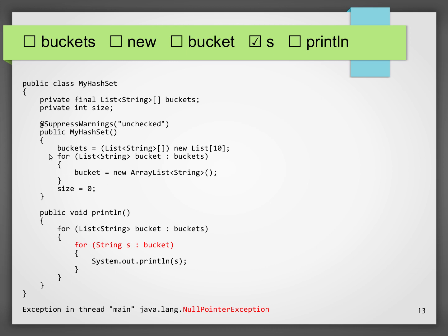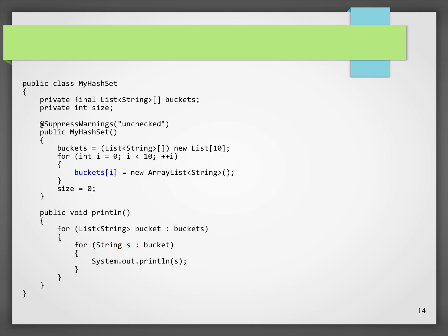So how do we mutate the original cells inside the array? If we can't do it with a for-each loop, we use a traditional for loop: starting at 0, all indices smaller than 10, increment by 1. Then buckets at index i is the original array cell — it's not a copy — so this assignment will have an effect. There's no task here; this is just to explain how you would do it. Now the program does what we expect it to do.